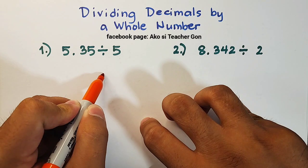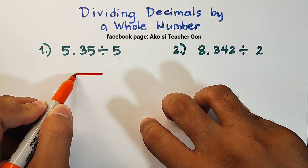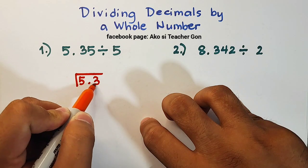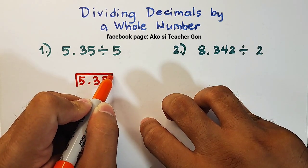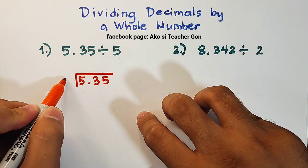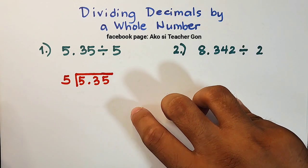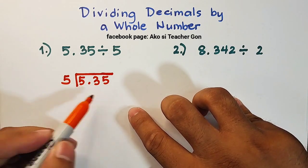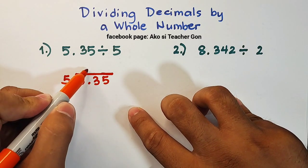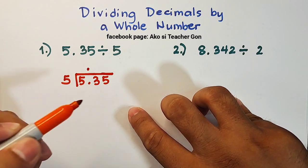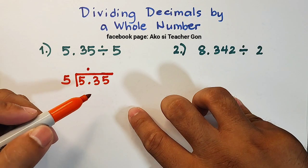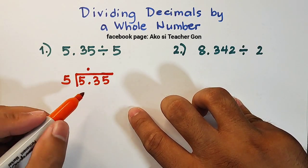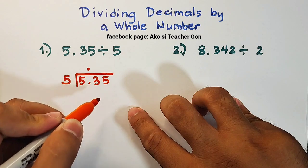This inside this part, we have 5.35. So I need to extend this, and your divisor will be placed outside. Now, if you're dividing a decimal by a whole number, you can directly bring up your decimal here because this will be the place of your decimal point when you get the quotient of your example. You can automatically bring up your decimal point.